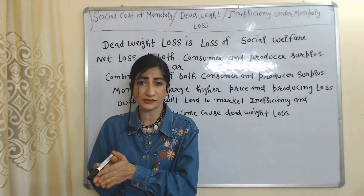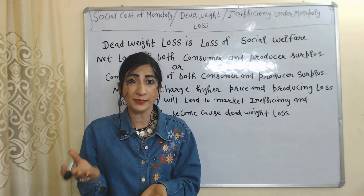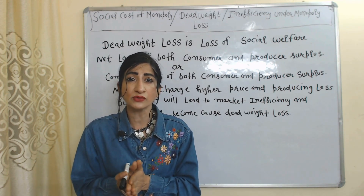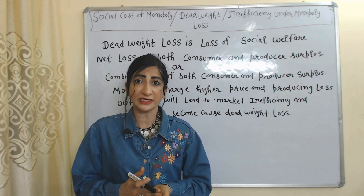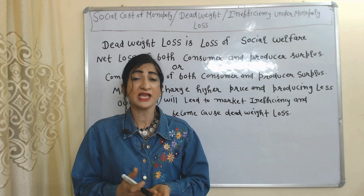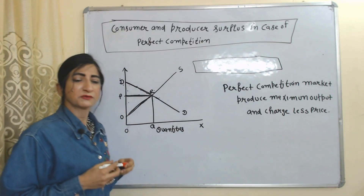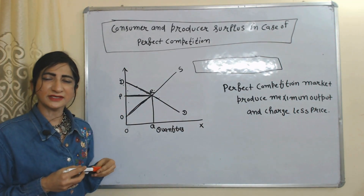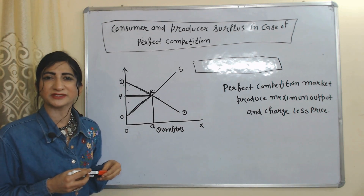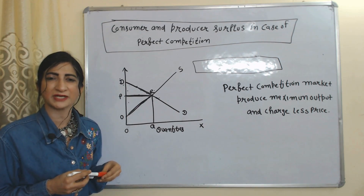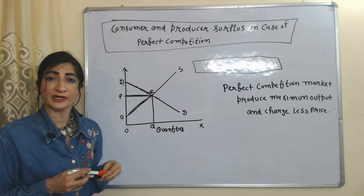As we know, the monopoly market charges a higher price and produces less, and higher price and less production lead to market inefficiency, which eventually becomes the cause of deadweight loss. We will understand deadweight loss in case of monopoly by doing a comparison with perfect competition, so first of all we will see consumer and producer surplus in case of perfect competition.